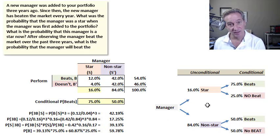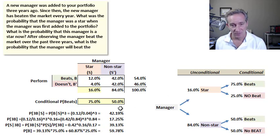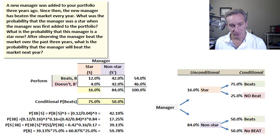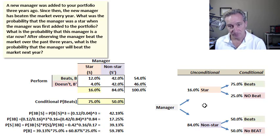I think sometimes with Bayes theorem questions the tree is more intuitive, but I've also captured the probability matrix — it's just a matter of style. The only three inputs given are highlighted here in yellow: 16, 75, and 50. Those are the hard-coded input assumptions.